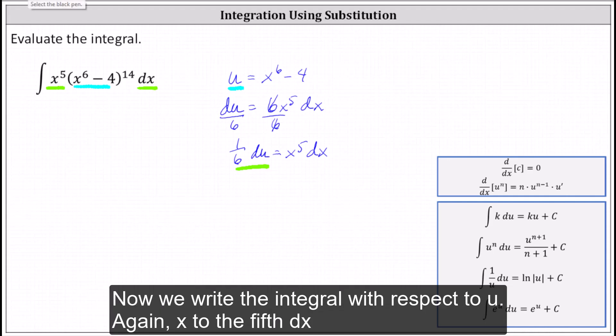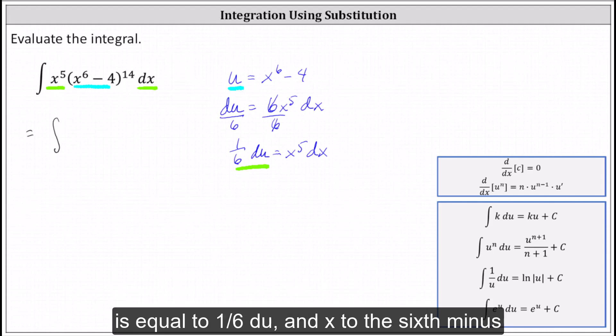which indicates we can replace or substitute x to the fifth dx with one-sixth du. Now we write the integral with respect to u. Again, x to the fifth dx is equal to one-sixth du.